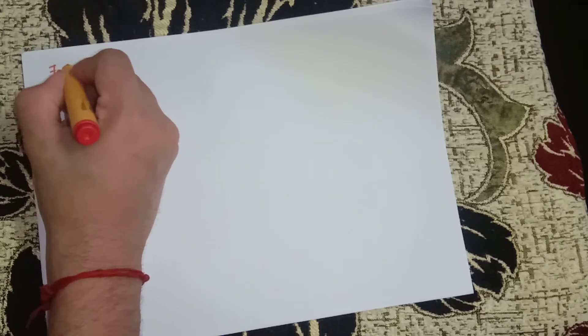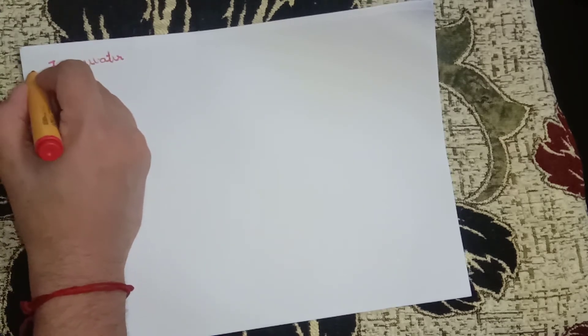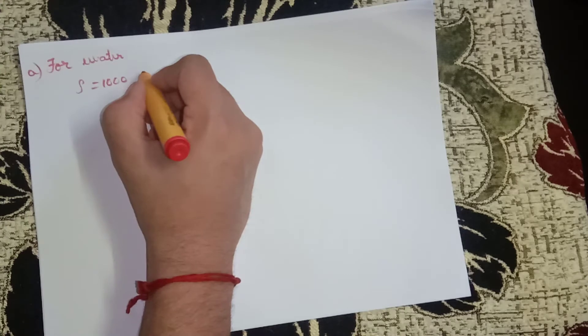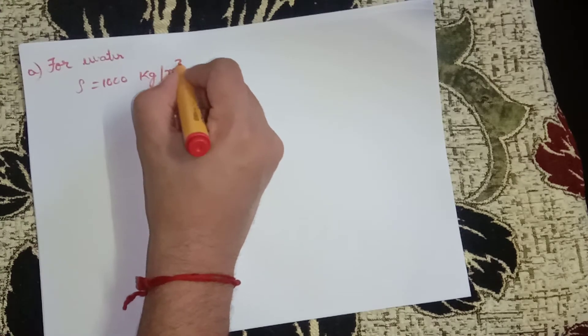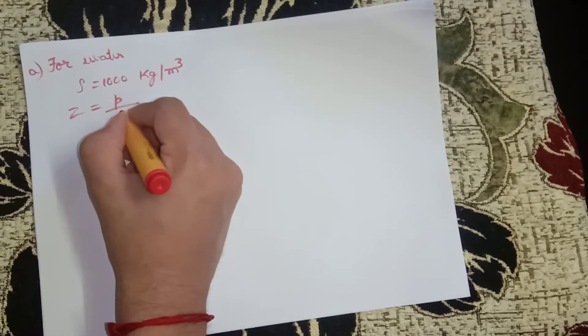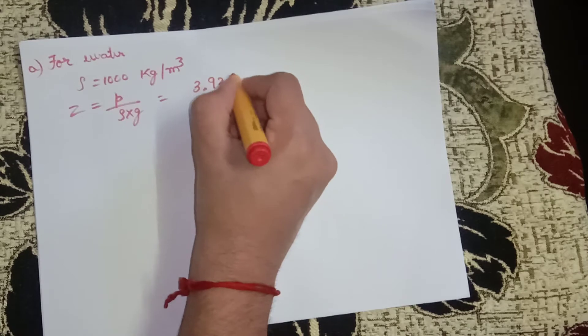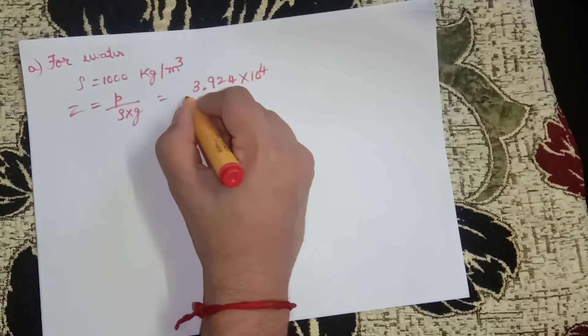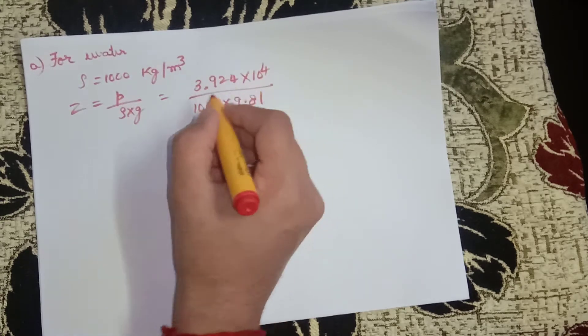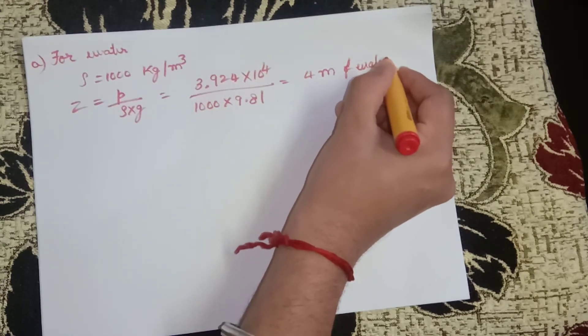Now for water, rho equals 1000 kg per meter cube. That is, z equals P divided by rho times g, and that equals 3.924 × 10⁴ divided by 1000 × 9.81. We'll get the answer as 4 meters of water.